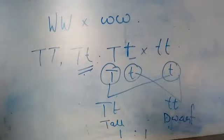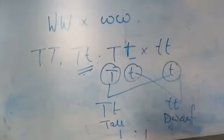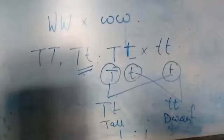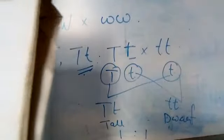From the monohybrid cross, Mendel formulated some laws or principles. They are known as the law of dominance and law of segregation. Sometimes you can also see them referred to as the law of paired factors or principles of paired factors. These principles of paired factors and law of dominance are not universally accepted because there are certain exceptions for them.